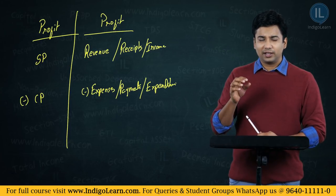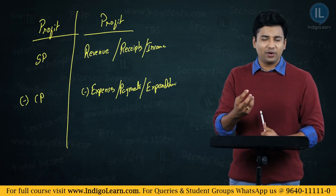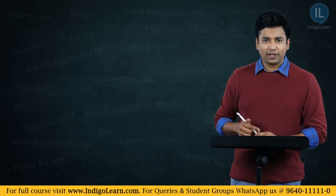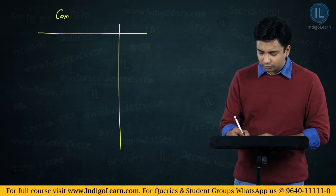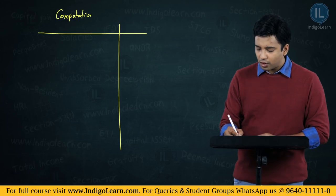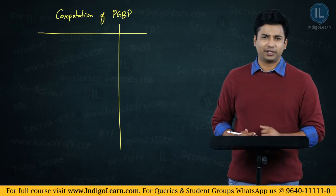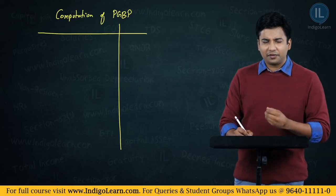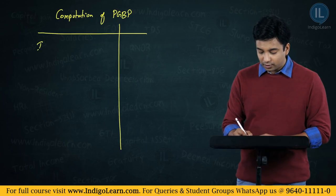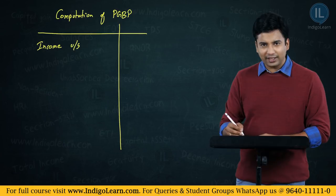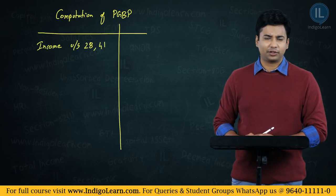Now you are stepping into income under the head profits and gains from business or profession. How is this profit computed? Computation of profits and gains from business or profession also works on a similar principle. Instead of revenue, we are going to consider all the income includable under this head as given by section 28 and section 41 — those are the charging sections.